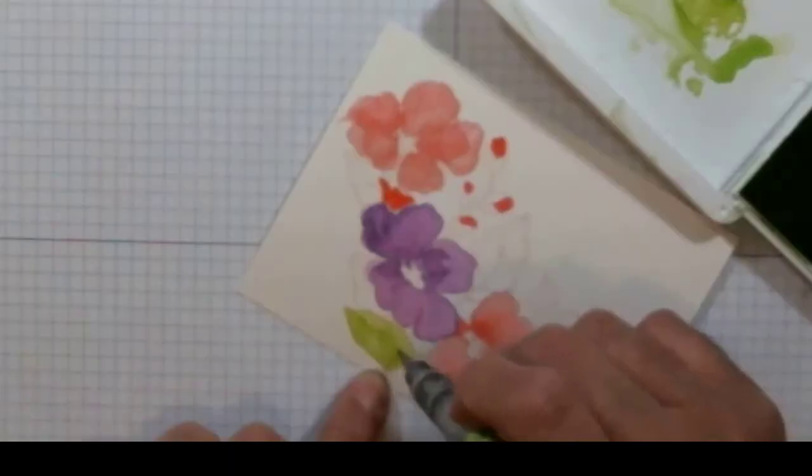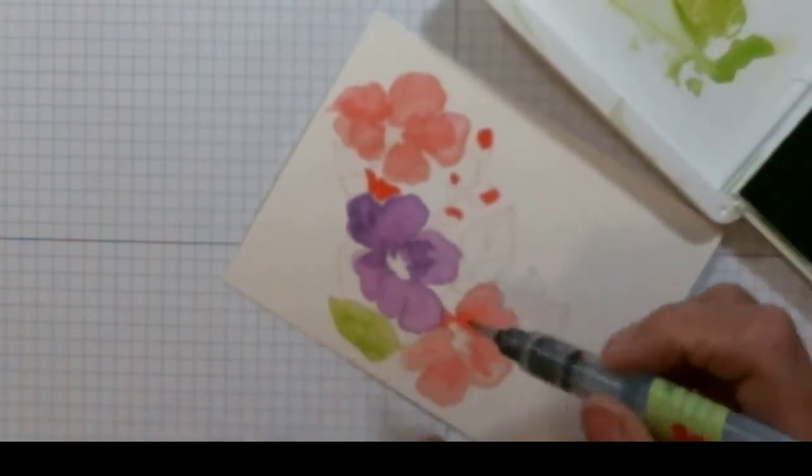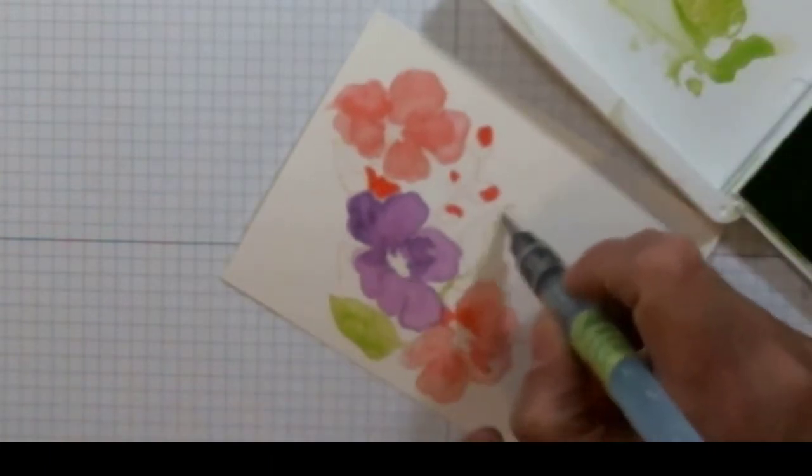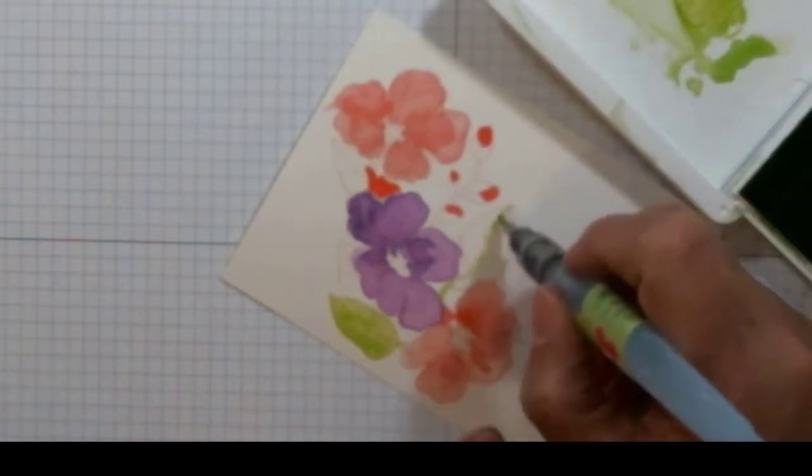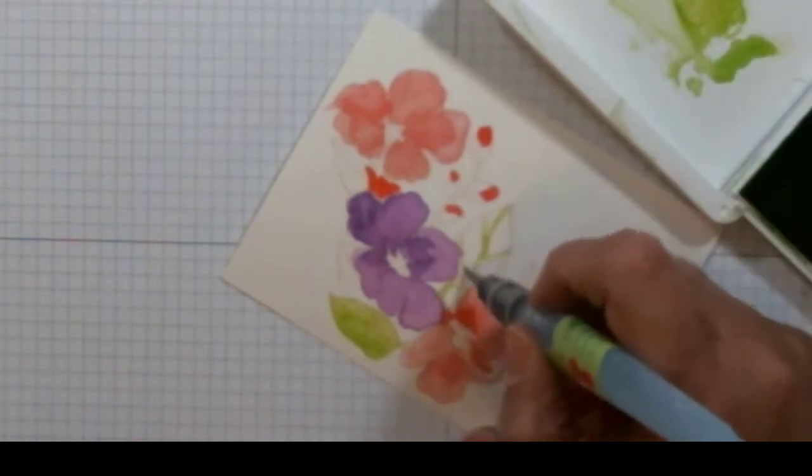Next we're going to move on to our leaves and the stems. I'm going to use Granny Apple Green. There is no difference to doing your leaves and stems than the flowers—you're going to just keep building up your color.